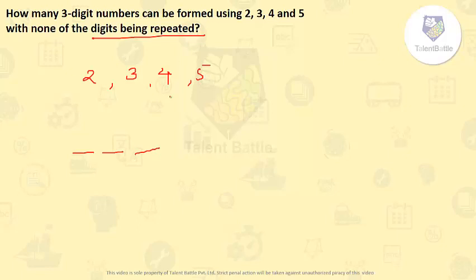So from this 4 we can arrange any one. So there are 4 options here. Now we can have only 3 options here because one of these has been arranged here and they have told that there is no repetition allowed. So we could only arrange 3 here because one has been arranged here already.